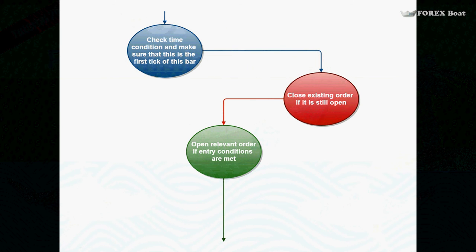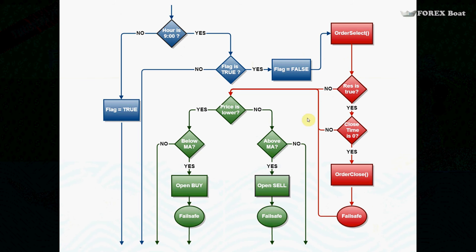Hello, this is Kirill from forexbot.com and welcome to the 26th tutorial on algorithmic trading for beginners. In the previous tutorial we started programming our very first algorithmic trading system and we did the blue part of our overview diagram. Today we're going to do the green part. We're going to skip the red part and connect straight to the green part — coding the entry condition for buy and sell and the failsafe mechanism.